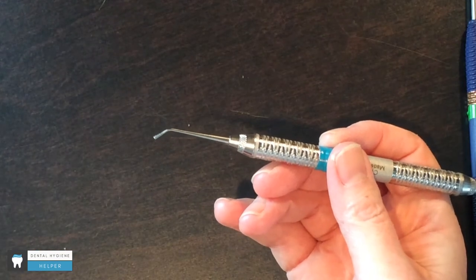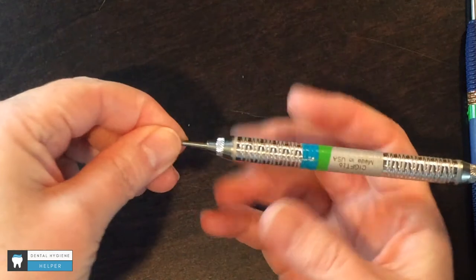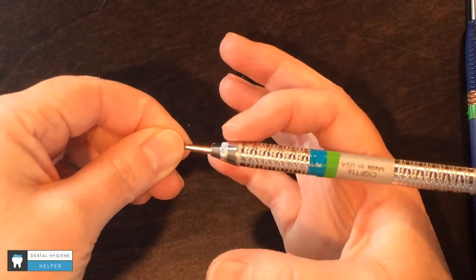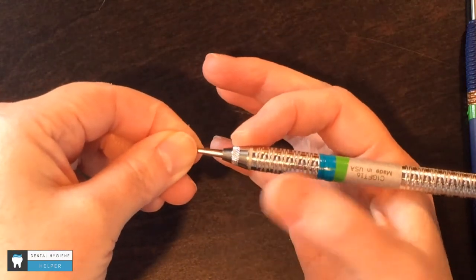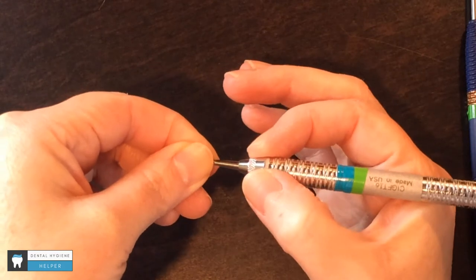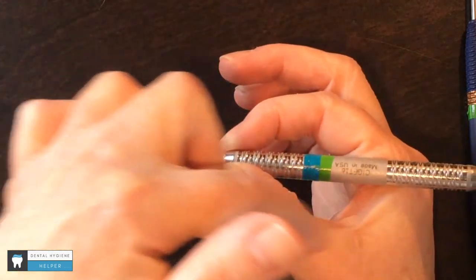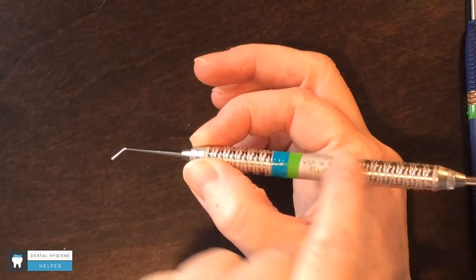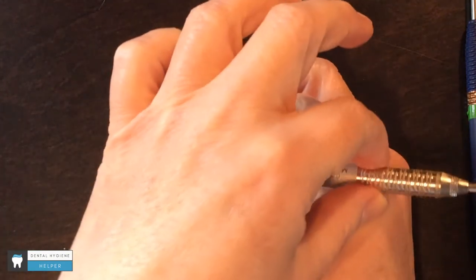To hold this in a modified pen grasp, I'm going to take the pad of my index finger against the end of the handle and then the tip of my thumb and create a C shape here, with the handle resting in the crook of that.